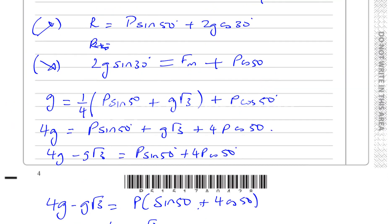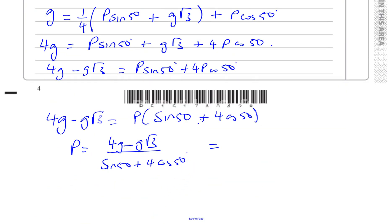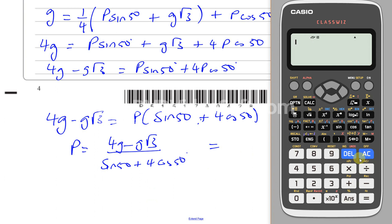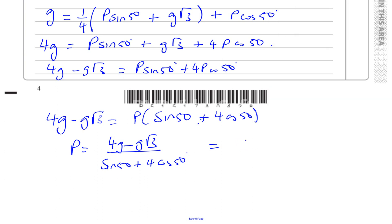So P equals (4g minus g root 3) divided by (sine 50 plus 4 cosine 50). Keeping things exact until the end, putting this in the calculator: numerator is 4 times 9.8 minus 9.8 times root 3, denominator is sine 50 plus 4 times cosine 50. That gives P equals 6.66 newtons, or 6.7 newtons to 2 significant figures.